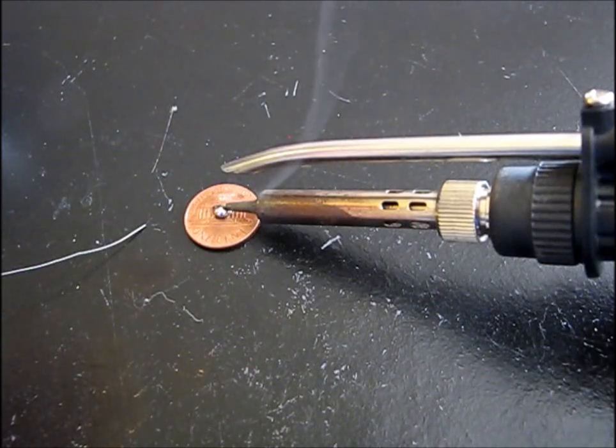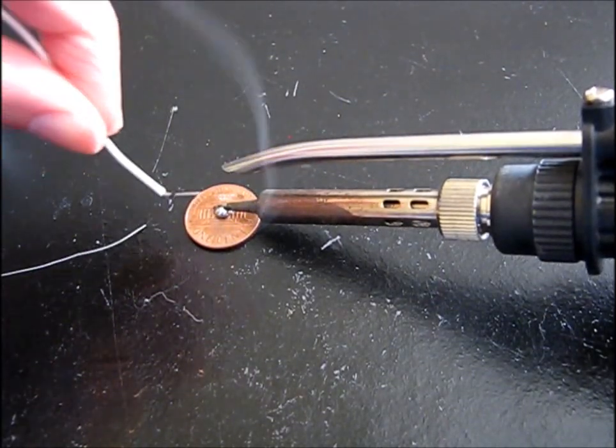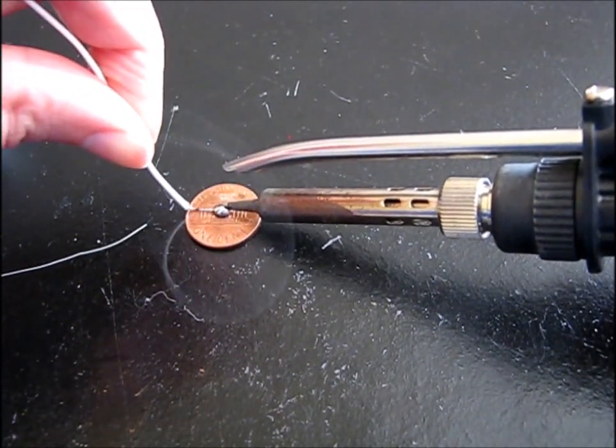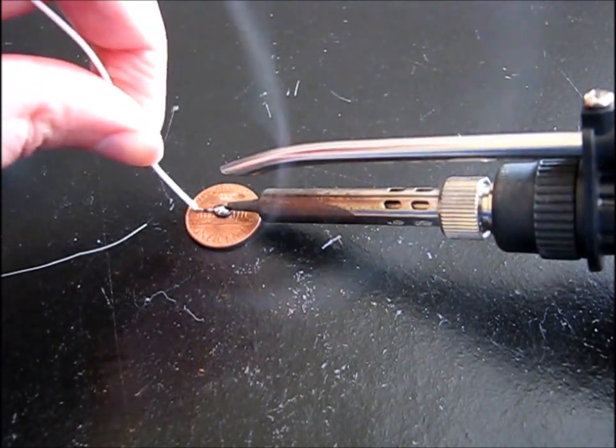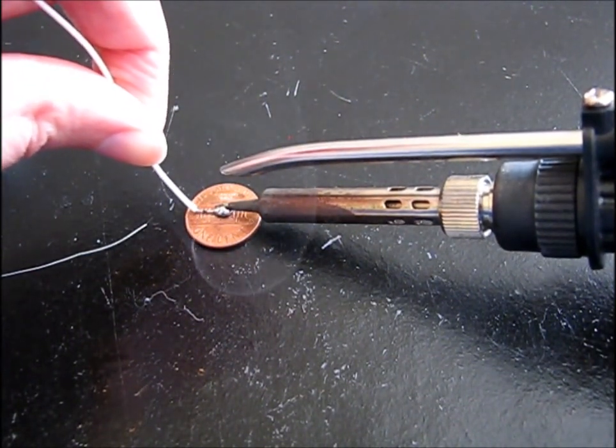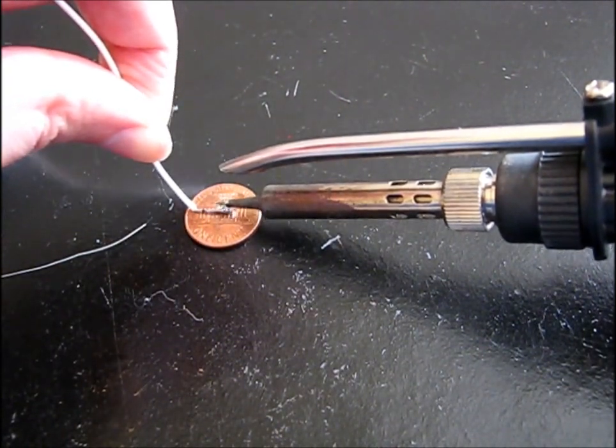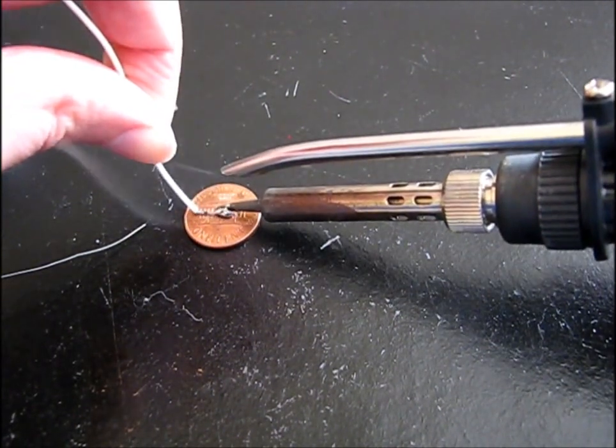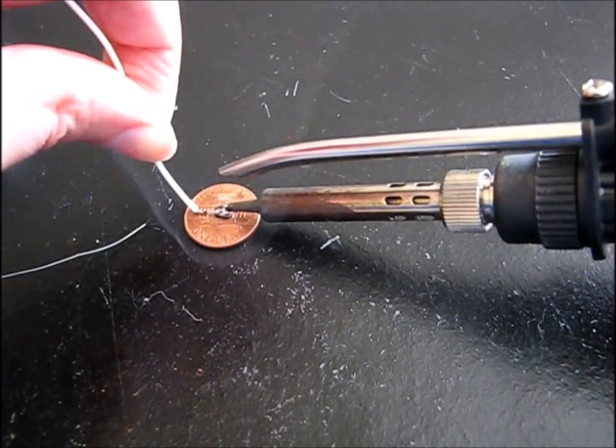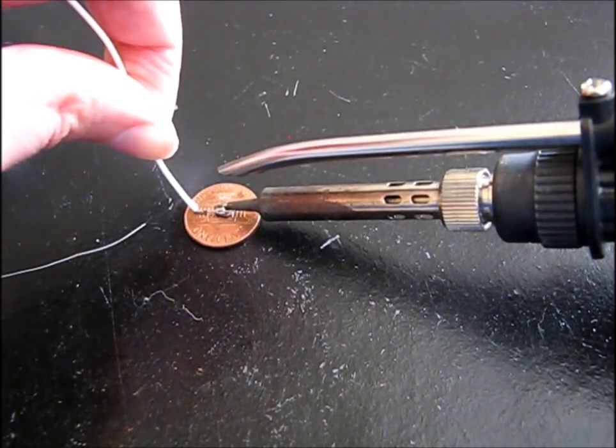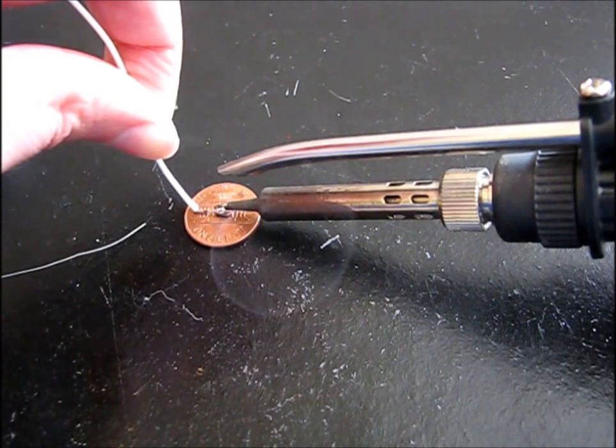Now attach the wire. And a trick to see if the solder is fully adhered is if the solder is able to be pulled off the penny, it's not ready. Like that. And if we wait a few more seconds, it should get to temperature.